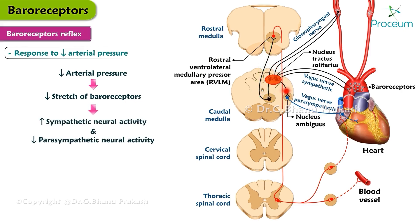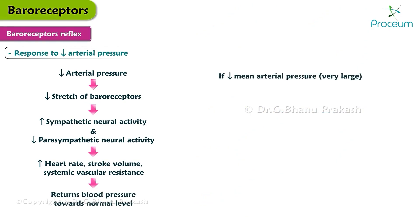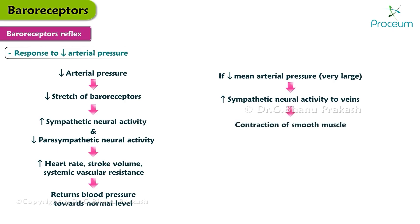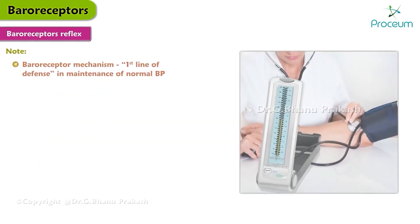Conversely, decreases in arterial pressure and decreased stretch of the baroreceptors increase sympathetic neural activity and decrease parasympathetic neural activity, resulting in increased heart rate, stroke volume, and systemic vascular resistance, returning blood pressure toward normal. If the fall in mean arterial pressure is very large, increased sympathetic neural activity to the veins causes contraction of the venous smooth muscle and reduces venous compliance, shifting blood toward the central blood volume and increasing right atrial pressure and stroke volume.